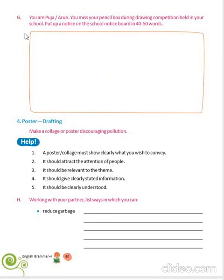Now come to G. Suppose you are Pooja or Arun. You miss your pencil box during a drawing competition held in your school. You have to put a notice on the school notice board in 40 to 50 words. This one you have to do yourself.